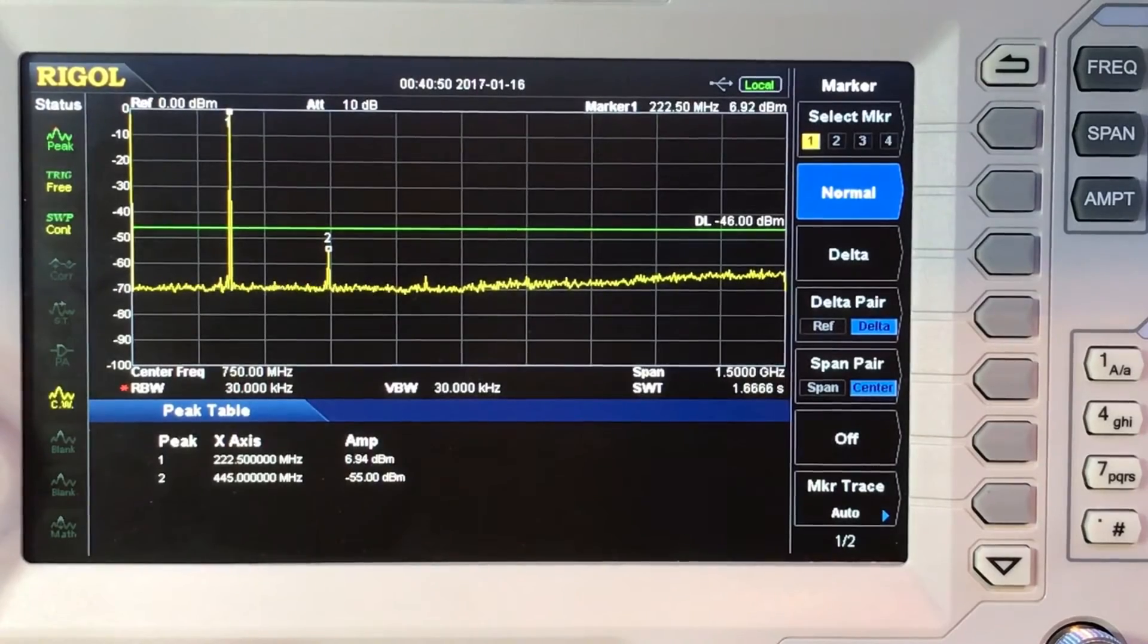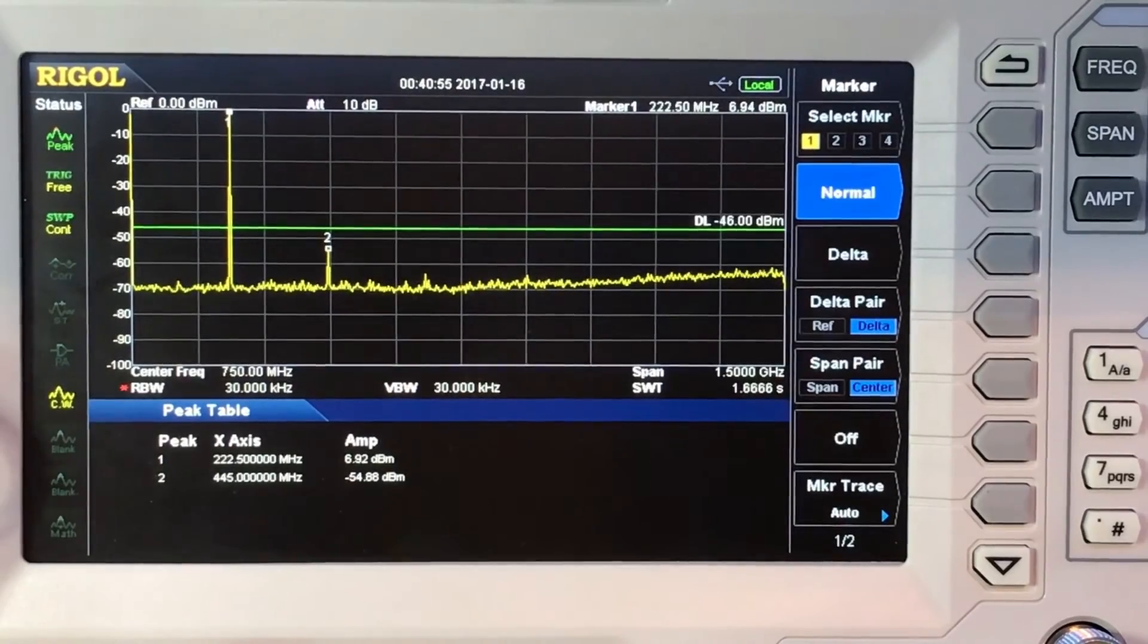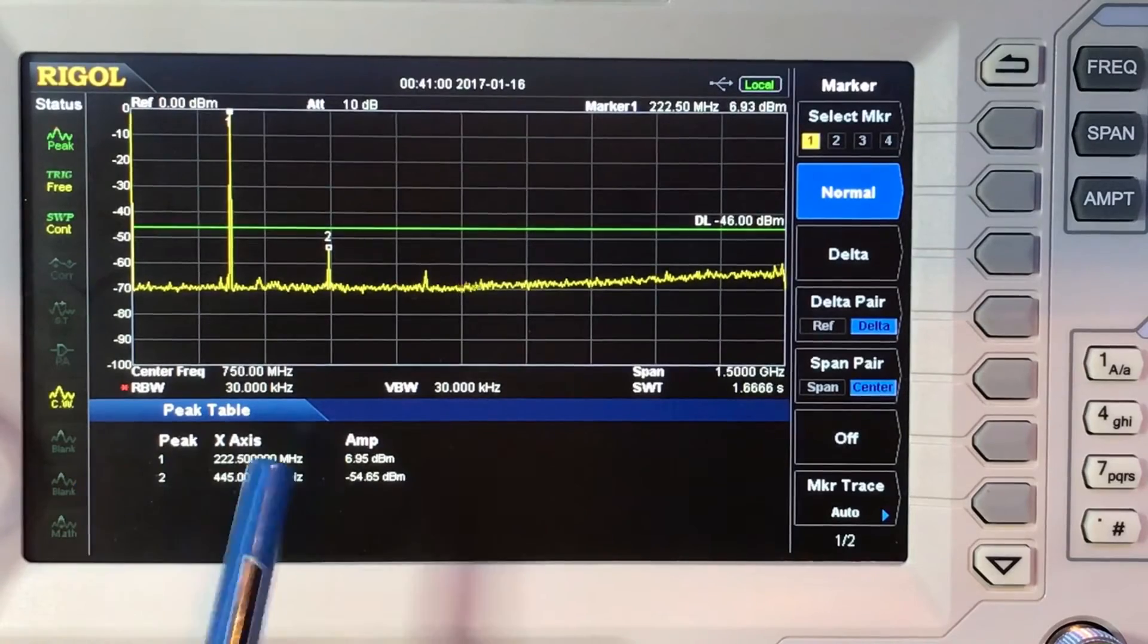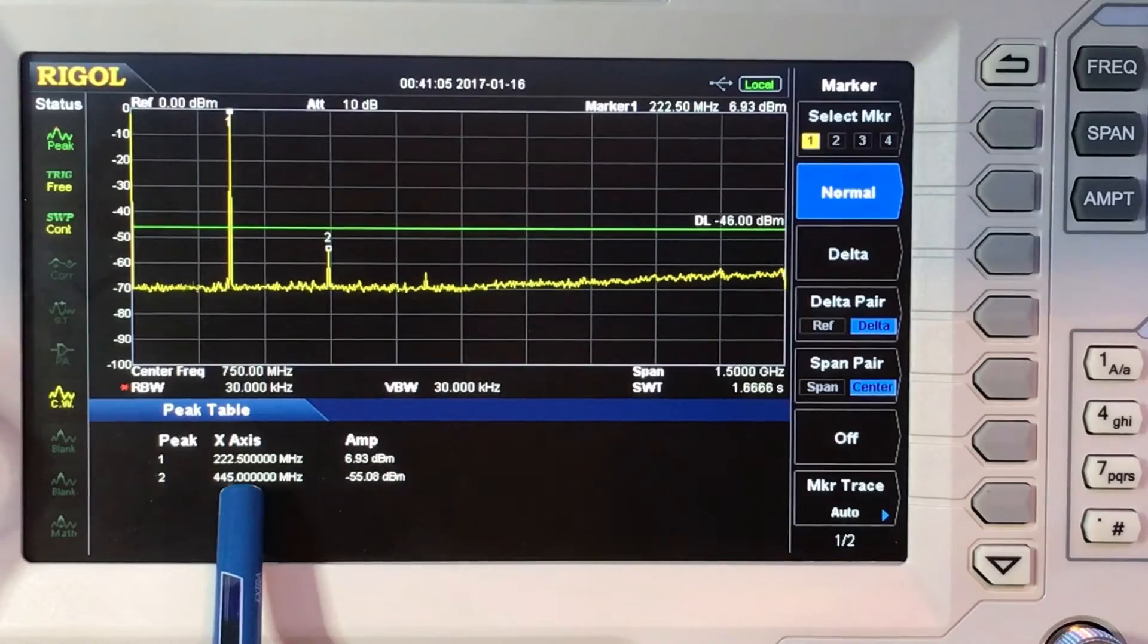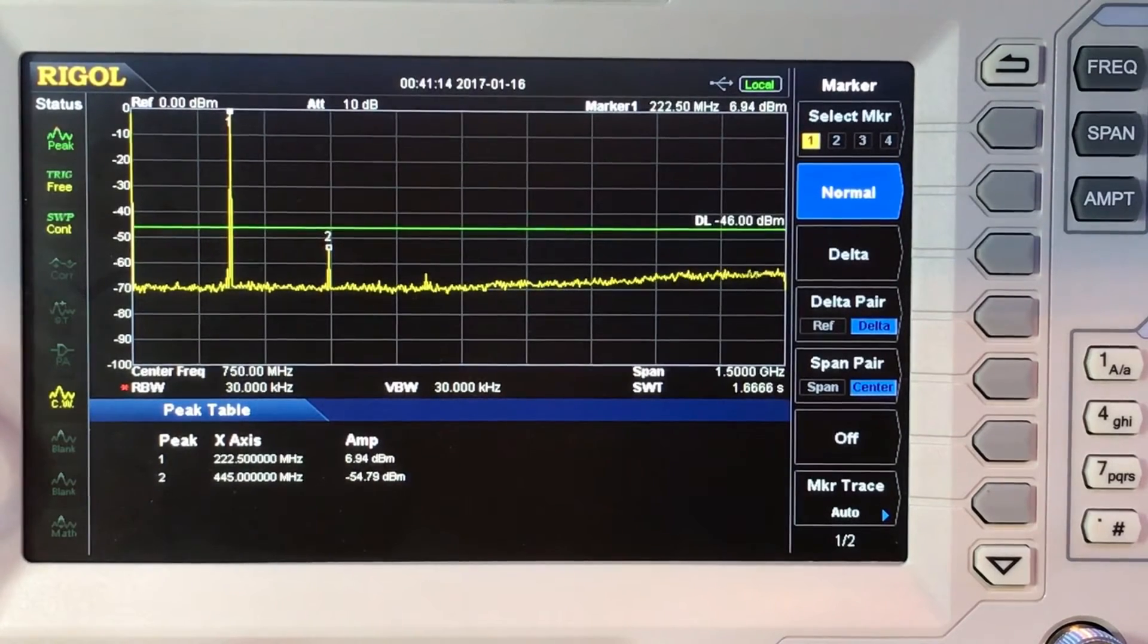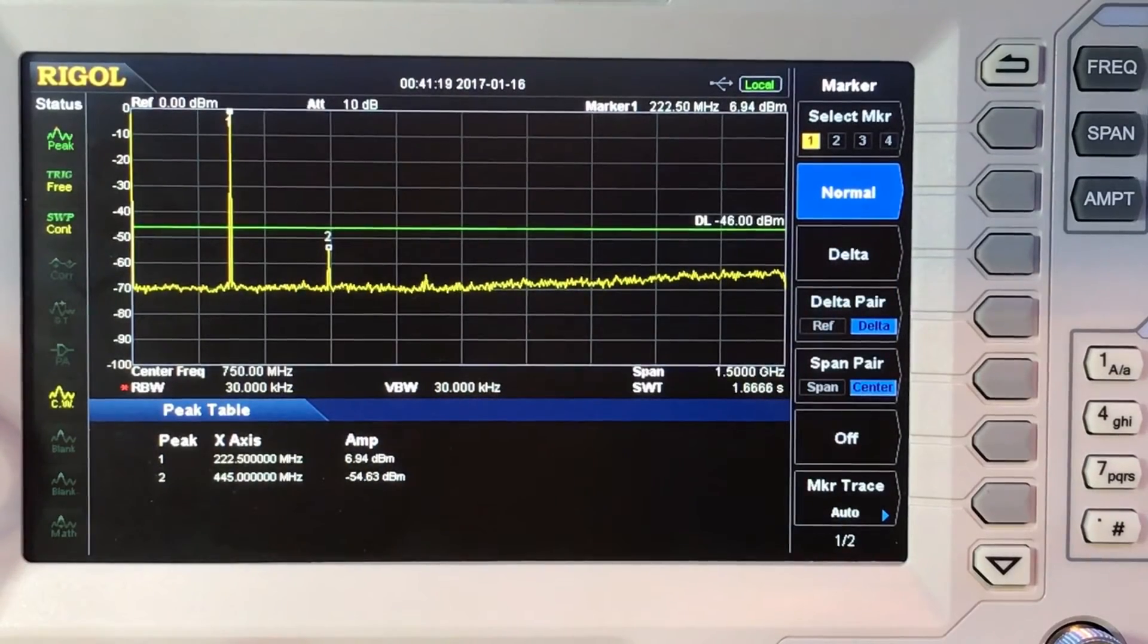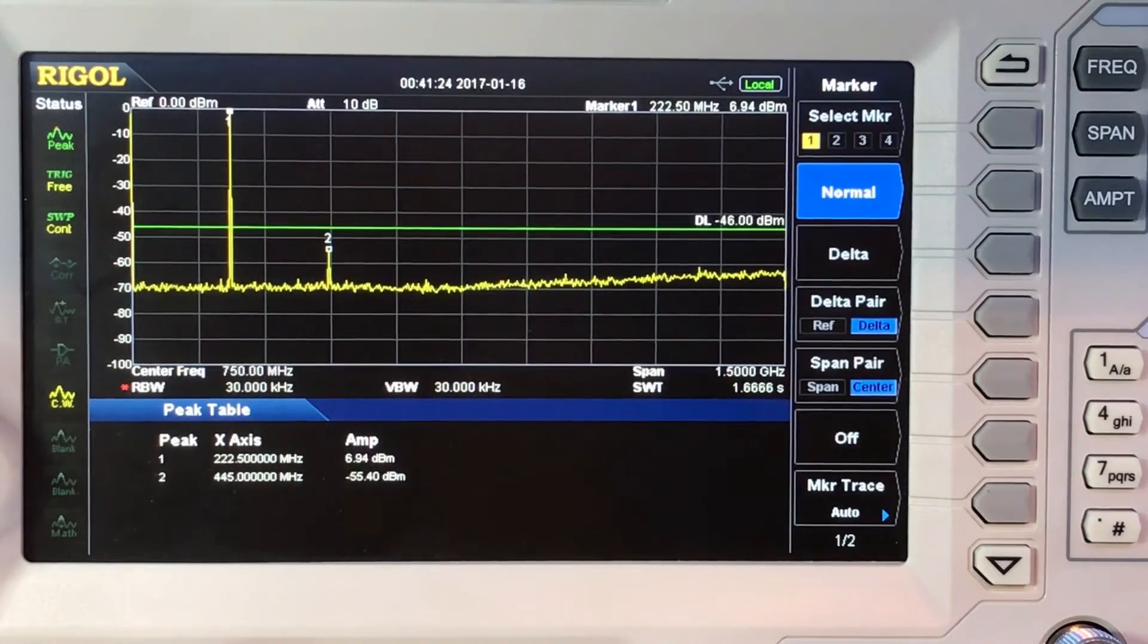We can see here on the peak table, it shows 222.5. Again, we're 222.68, but the resolution here. We have the second harmonic on 440, and that's 55 dB down. Again, going through this here, you add 20 dB to that and you're perfectly fine. You can see we're well under our 46 dBm line there by about 10 dB, which is great for a secondary harmonic.